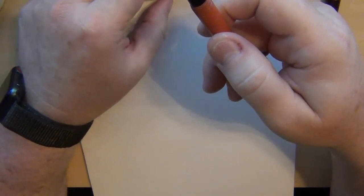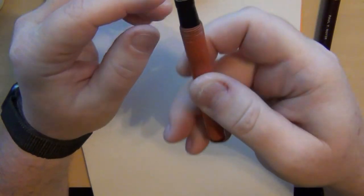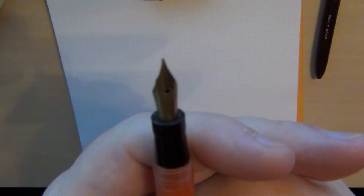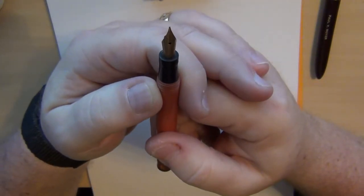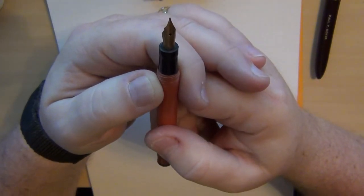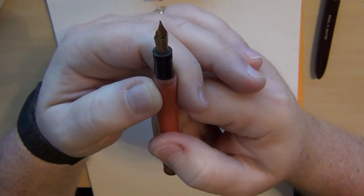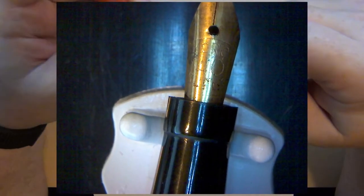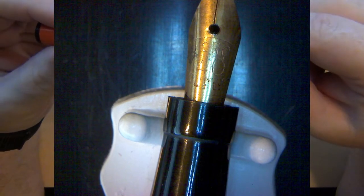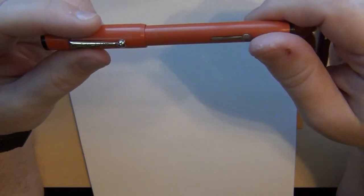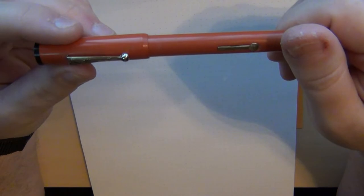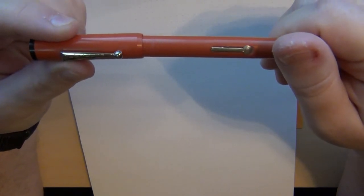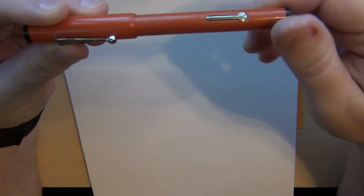It's got a nib on it and I'll be honest with you, even under a loupe I'm having a hard time getting the name of it. I think it says Micro on it, but I will see if I can put it under my microscope. It is another lever filler and this one does have a new sack in it.